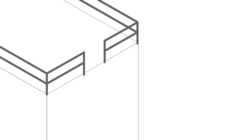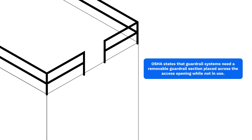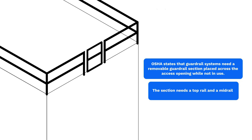When dealing with hoist areas, OSHA states that guardrail systems need a removable guardrail section placed across the access opening while not in use. As mentioned, the section needs a top rail and mid rail.